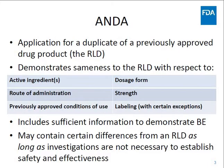An ANDA is an application for a duplicate of a previously approved drug product, which is the reference listed drug or the RLD. An ANDA relies on FDA's finding that the RLD is safe and effective. This application contains information to demonstrate that the proposed drug product is the same as the RLD with respect to the active ingredient or ingredients, dosage form, route of administration, strength, previously approved conditions of use, and labeling, with certain exceptions. In addition, an ANDA contains sufficient information to demonstrate bioequivalence to the RLD. An ANDA may contain certain differences from an RLD as long as investigations are not necessary to establish safety and effectiveness.